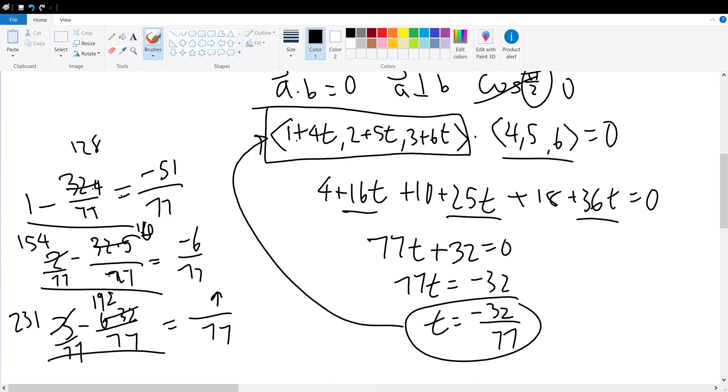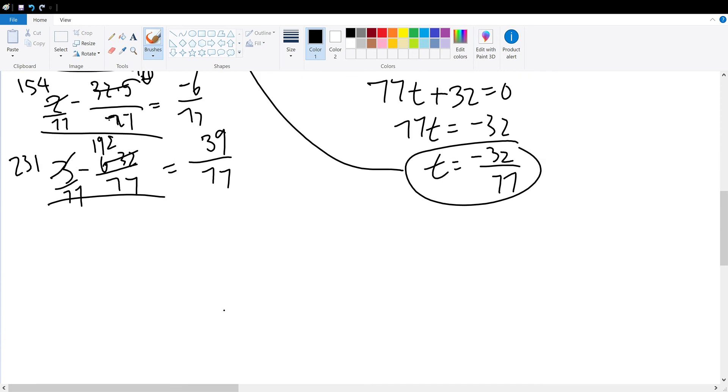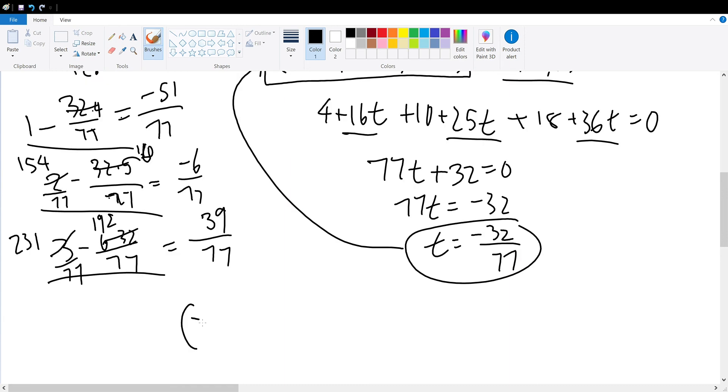To get a final result of 39 over 77. Here we have the coordinate of the shortest point, or the point closest to the origin, which is negative 51 over 77, negative 6 over 77, and 39 over 77.